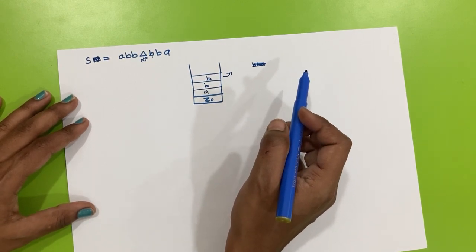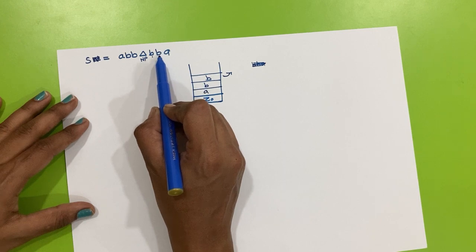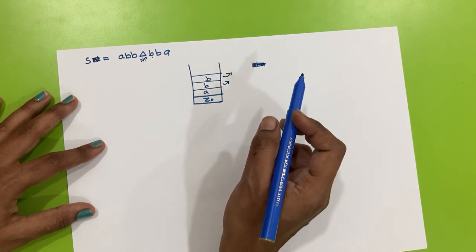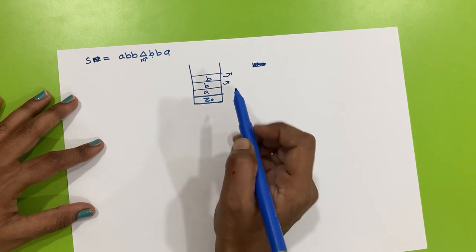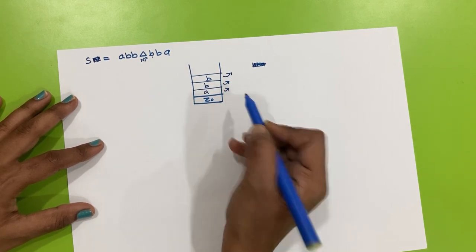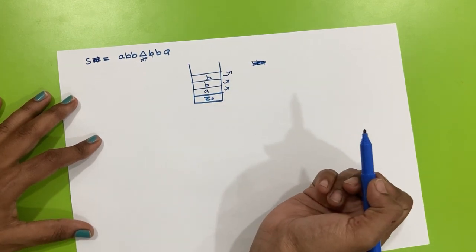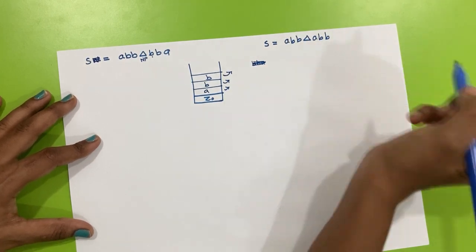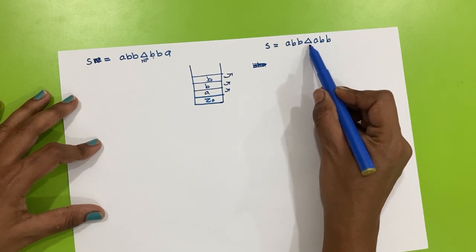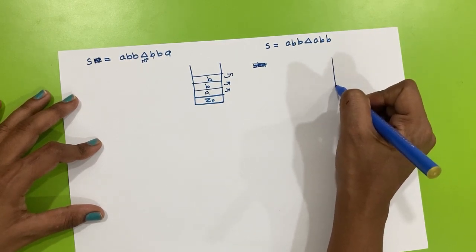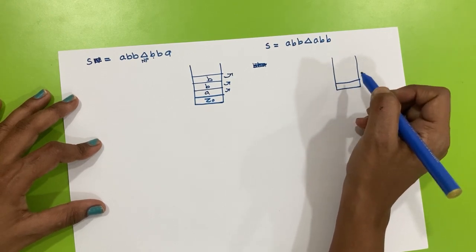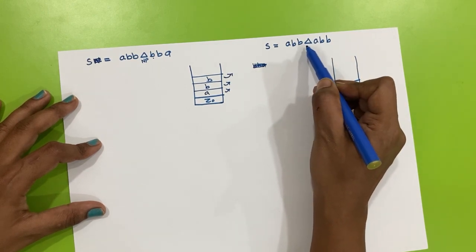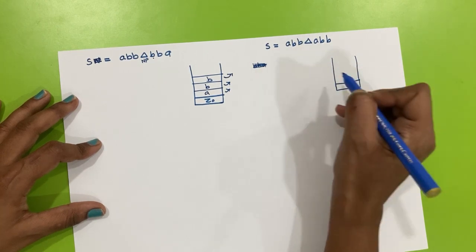Moving right: if input symbol is b and top of stack is b, we pop; again if input is b and top is b, we pop; then if input is a and top of stack is a, we pop. The popping string will be bba, which matches the reverse of w = abb. Now, consider the string abb△abb.